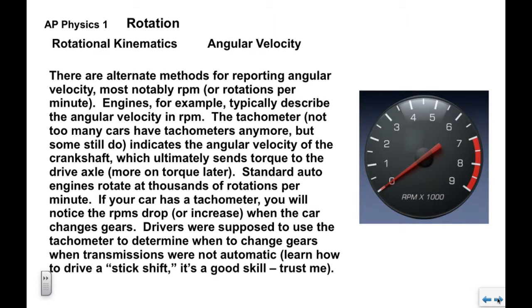There are other ways to report angular velocity, most notably RPM — rotations or revolutions per minute. Engines, for example, typically describe their angular velocity in RPMs. Your car may have a tachometer which indicates the angular velocity of the crankshaft, sending torque and power to the drive axle. Standard automobile engines rotate at thousands of rotations per minute; tachometers display RPMs times a thousand, and cars usually operate between two and three thousand RPMs.